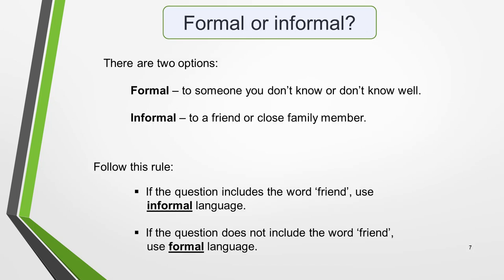Your letter must be written in the appropriate tone and style. There are two options: formal, to someone you don't know or don't know well, and informal, to a friend or close family member. It's essential that you are able to identify what type of letter you are required to write. Follow this general rule: if the question includes the word 'friend', use informal language; if it does not, use formal language. A complaint letter will almost always be addressed to someone you don't know, and will thus be a formal letter, so this is what we'll focus on for the rest of the lesson.